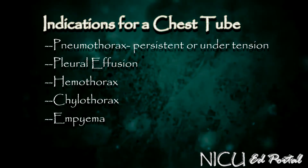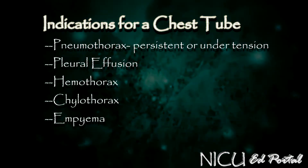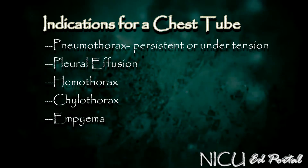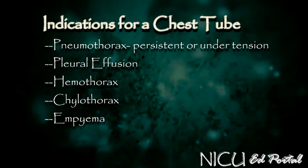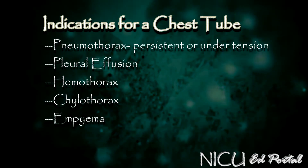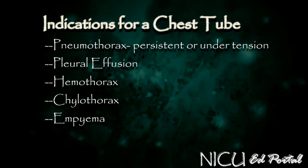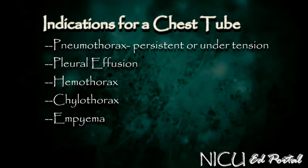The indications for placing a chest tube include a tension pneumothorax — one that hasn't resolved with needle thoracosynthesis — a pleural effusion, a hemothorax, chylothorax, or an empyema.